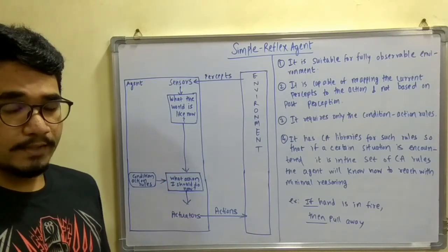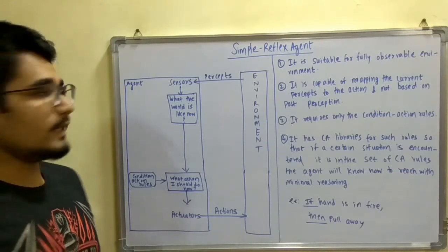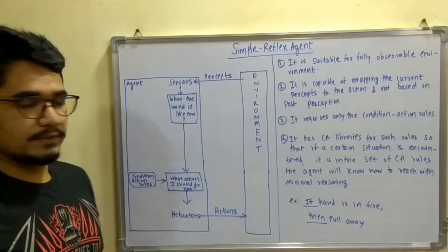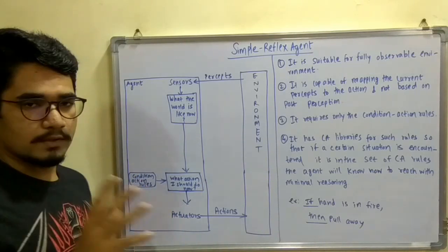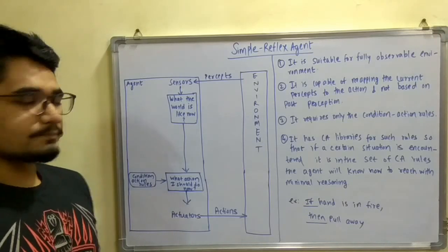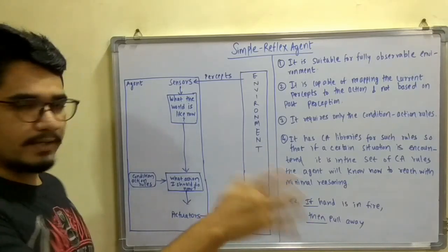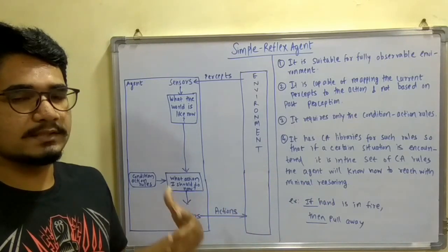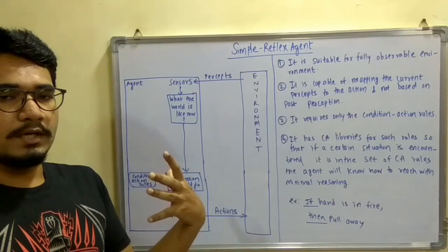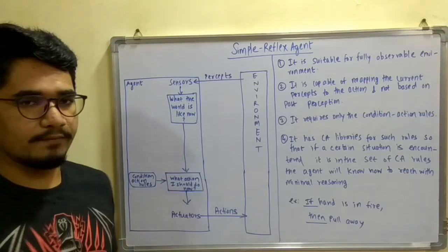Next time, whenever it perceives an environment, and if it senses that environment is very hot, then it will learn from this knowledge base which it has and it will rule basically from these CA libraries. It will act like this: if hand is in fire, or if it senses its body temperature or other external surrounding is in a hot condition, then it will pull it away immediately.